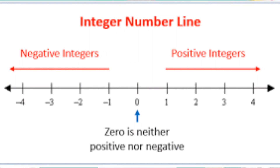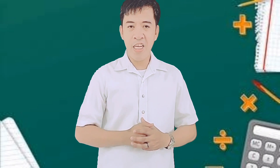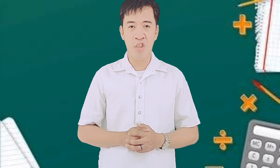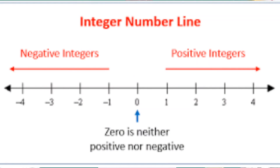Positive integers are the numbers at the right of zero on the number line. If an integer has no sign, it means it is a positive integer. Negative integers are the numbers at the left of zero on the number line. The sign for a negative integer is a minus sign, and a negative integer is less than zero. Zero is neither positive nor negative.